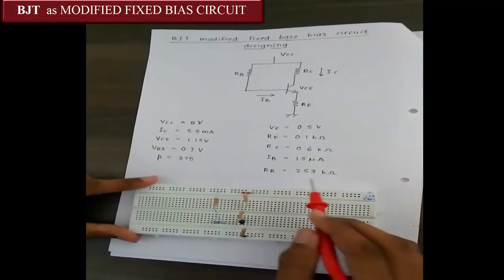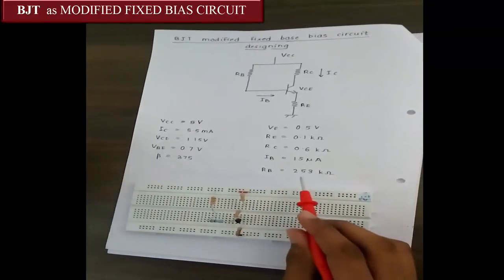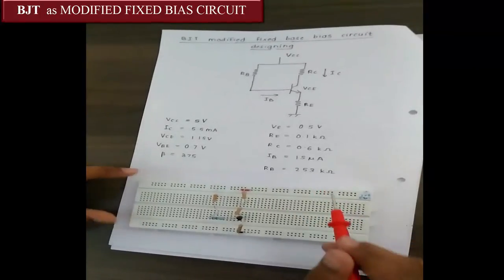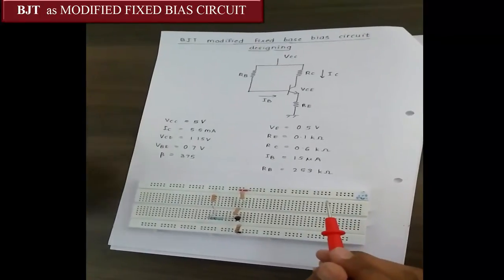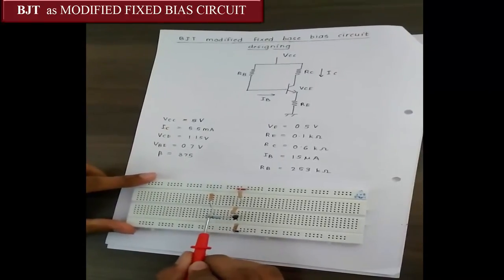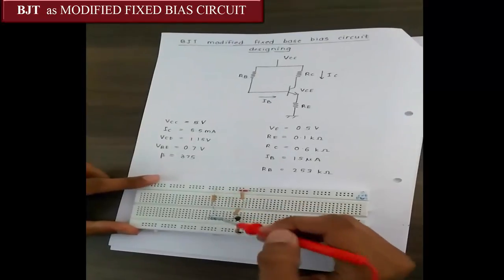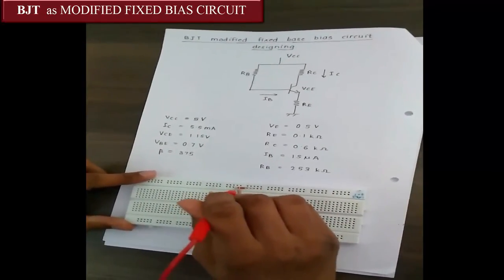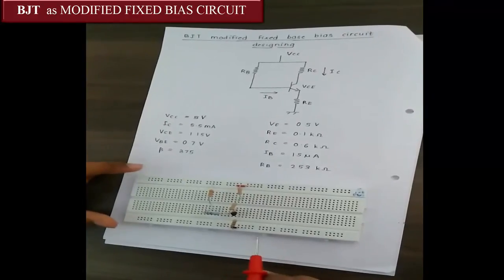The base resistance is of 253 kilo ohms. For getting 253 kilo ohms, we have used 220 kilo ohm resistor and 33 kilo ohm resistors and they are connected in series. We can see that 220 kilo ohm and 33 kilo ohm resistors are connected in series and that is given to VCC. The red wire indicates VCC whereas the black wire indicates ground.